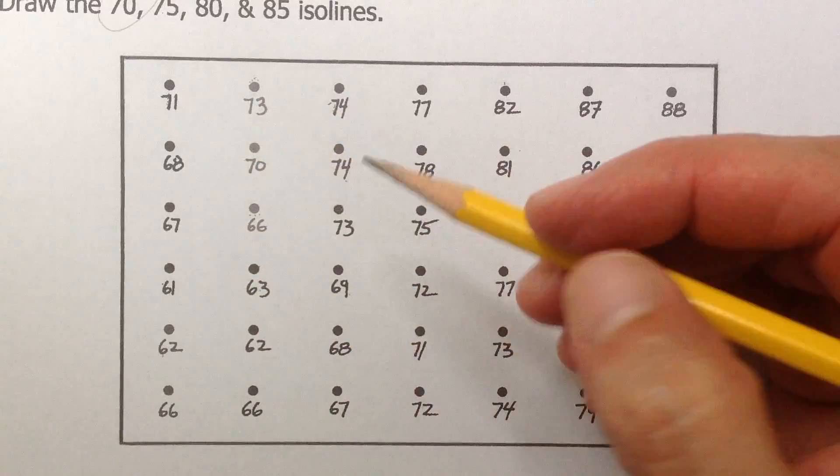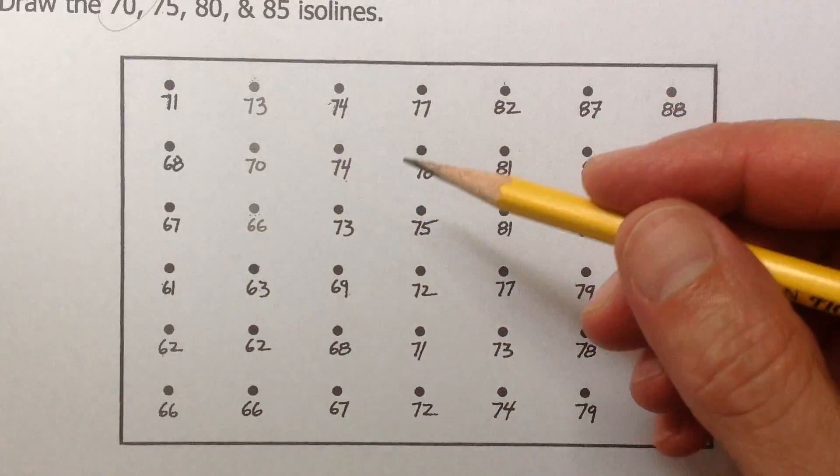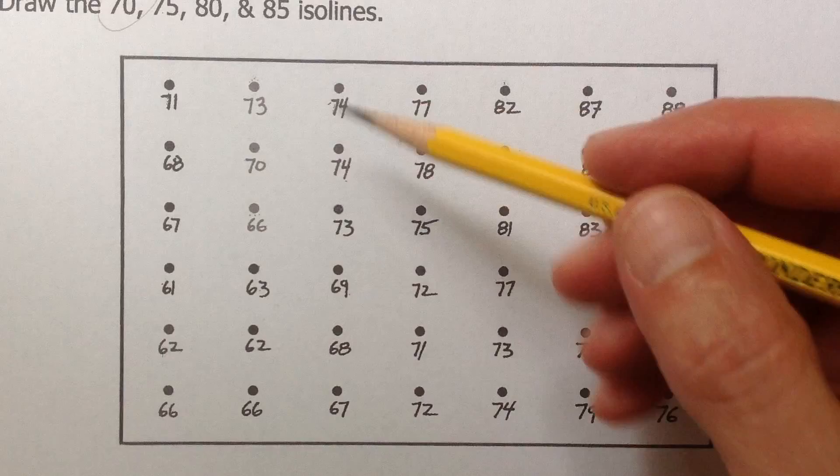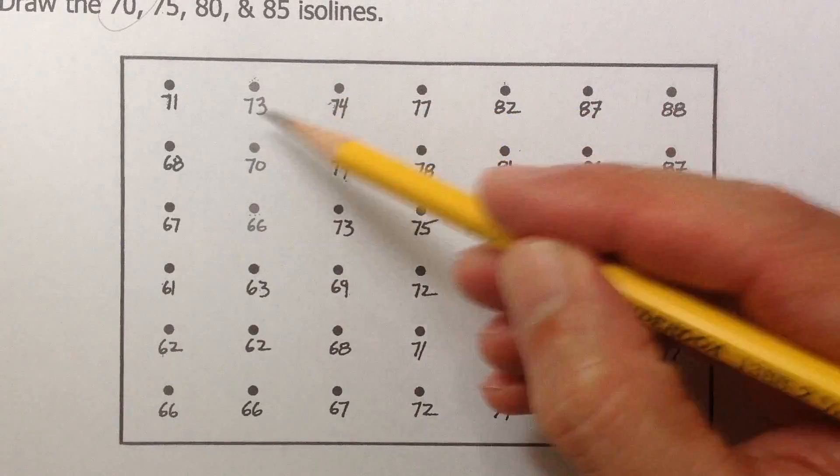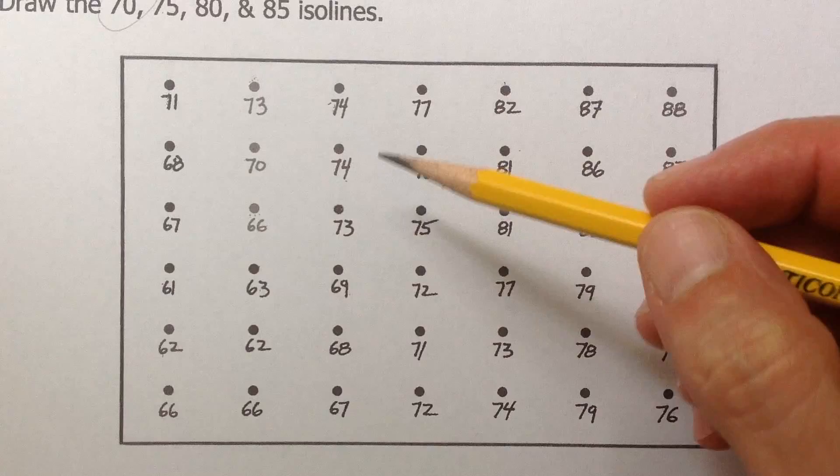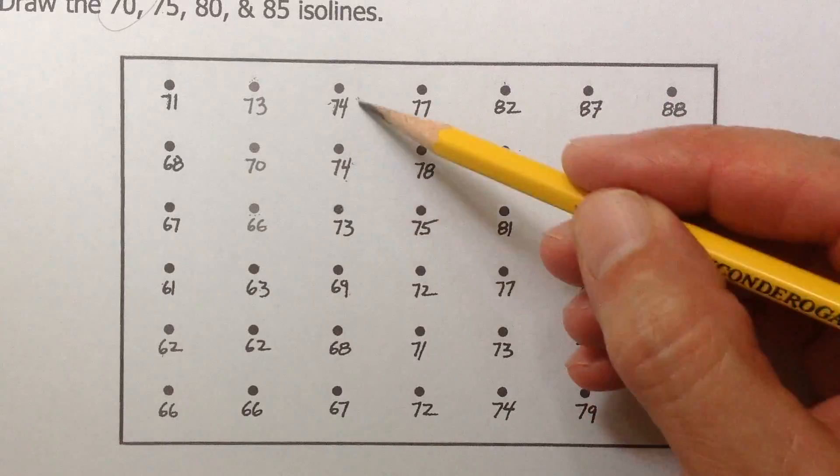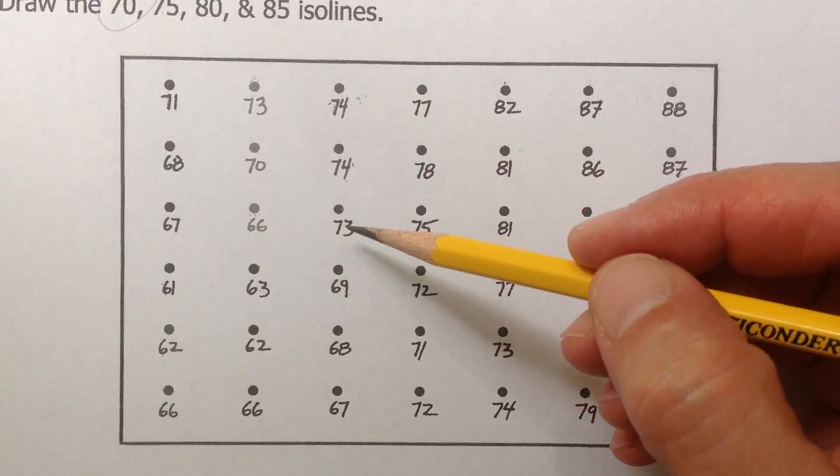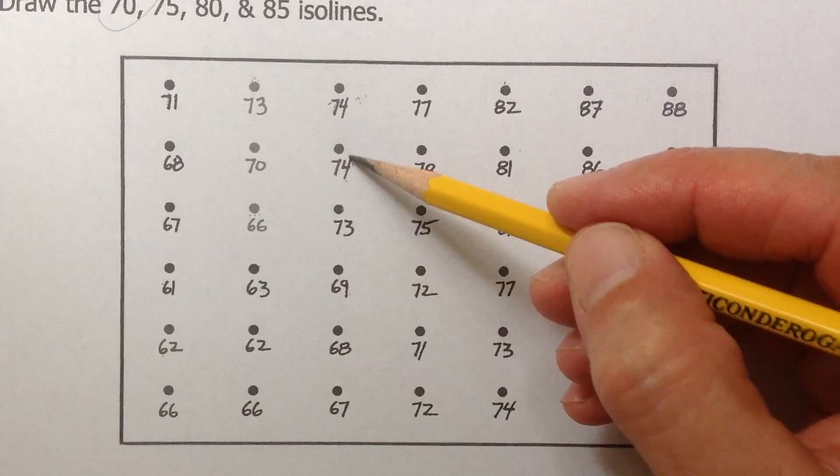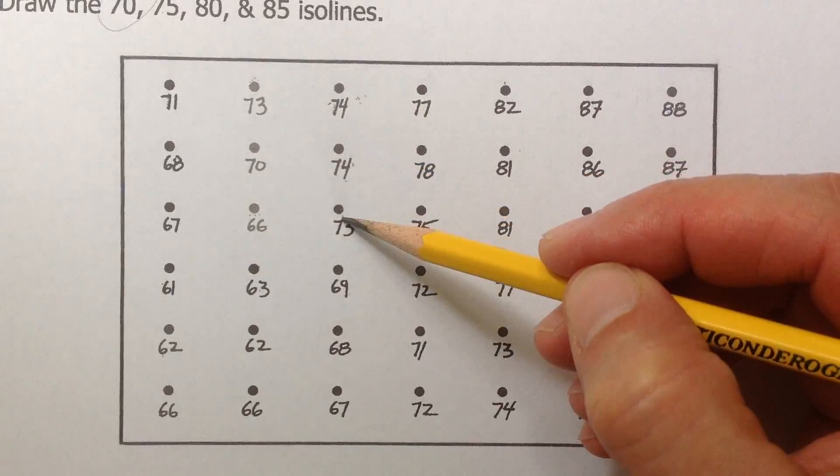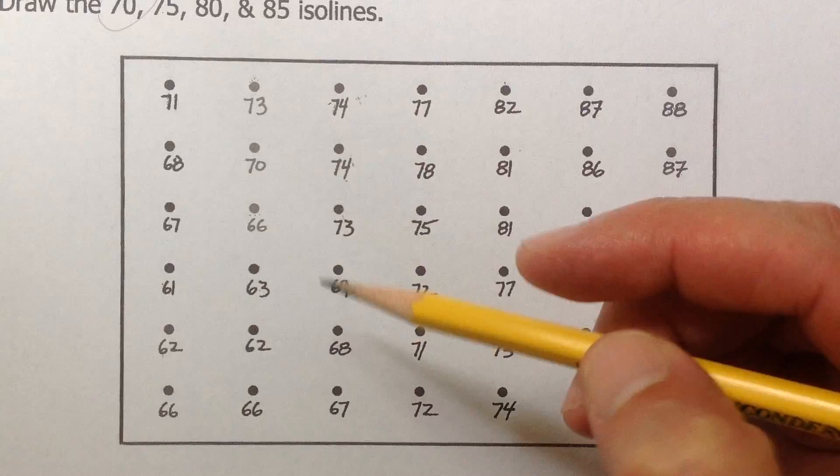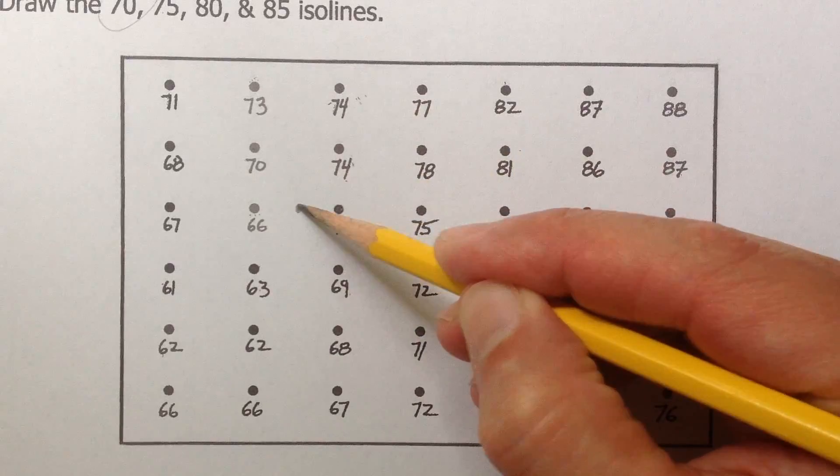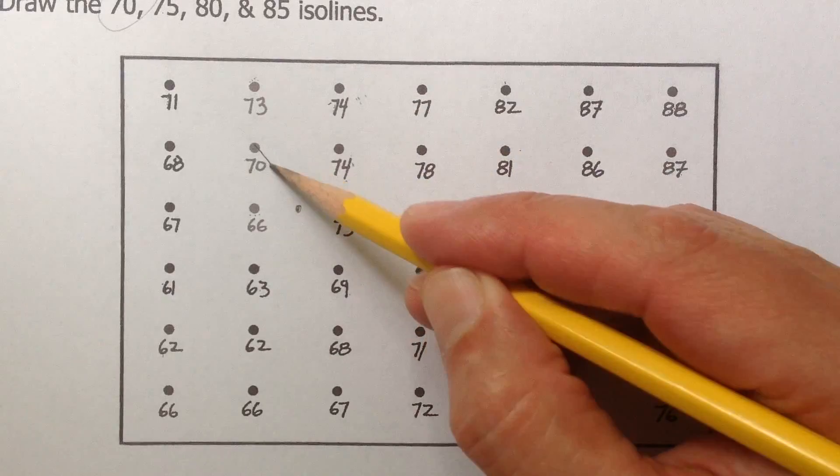If you look around here, there is not another dot that is exactly 70, so you need to estimate. So where is the next 70? Is 70 between these two numbers here, 73 and 74? No, it's not. They're too high. Is 70 between 74 and 74? Nope, those are too high. Is 70 between 74 and 73? Nope, so I'm not going there. Is 70 between 73 and 66? Well, yes, it is. So draw a dot right there, and then connect it to that.